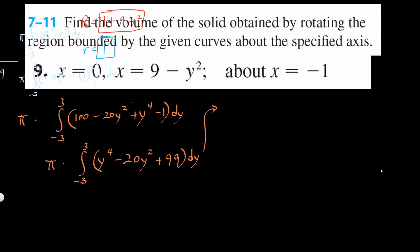Let's solve it on the right side here now. So pi times, when you integrate it, it's y to the fifth power over 5, minus 20y cubed over 3, plus 99y. Everything from negative 3 to 3.